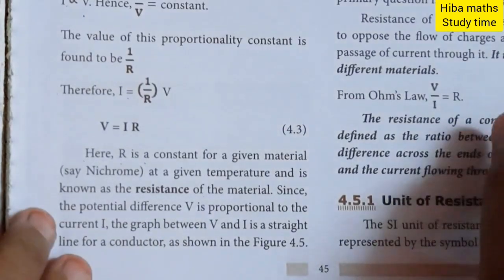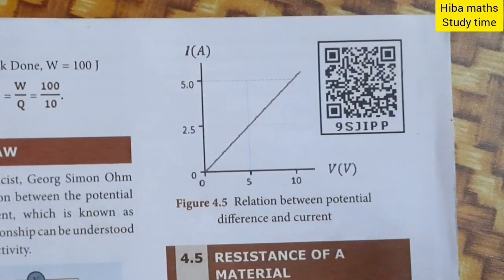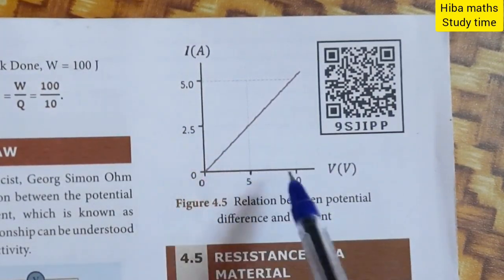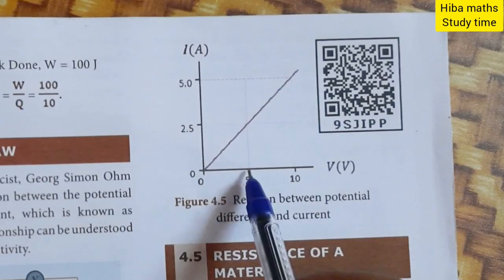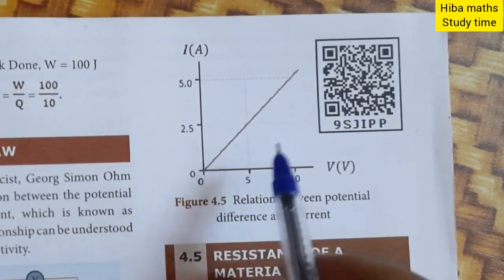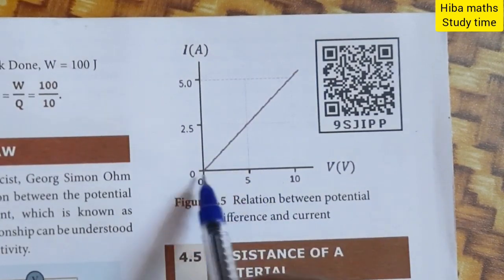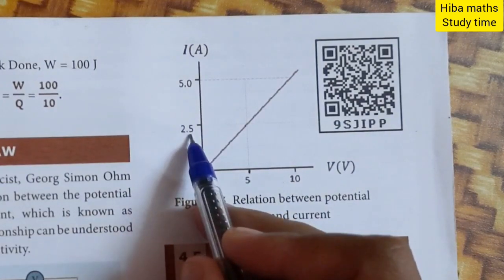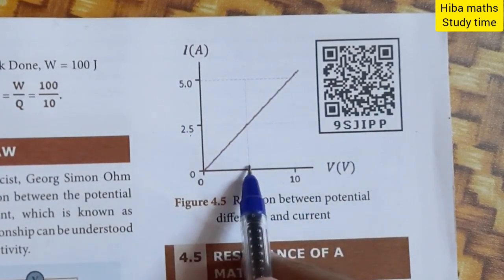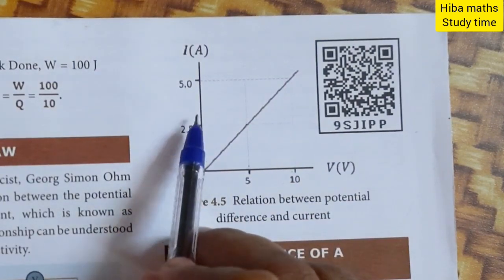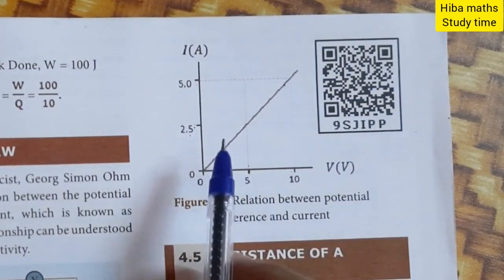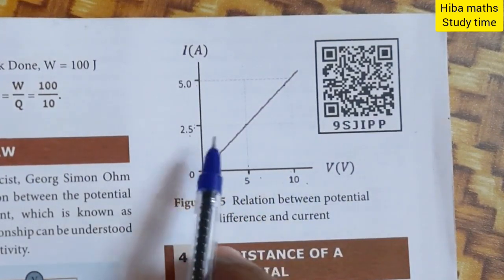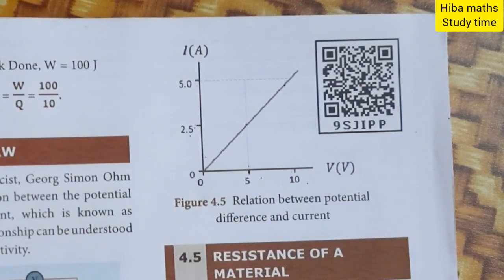Now let's look at the graph showing the relation between potential difference and current. The graph shows a diagonal straight line. As voltage increases, current increases. We plot points starting from zero and connect them, giving a straight line diagonal, confirming that V is directly proportional to I. We can prove this practically by plotting the values.